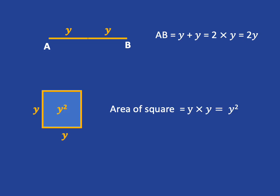The area of a square is Y times Y, which is Y squared. And again, the thing I'm wanting you to notice is Y plus Y is a length, and it's 2Y, whereas Y times Y is a square, is an area of a square, which is Y squared.